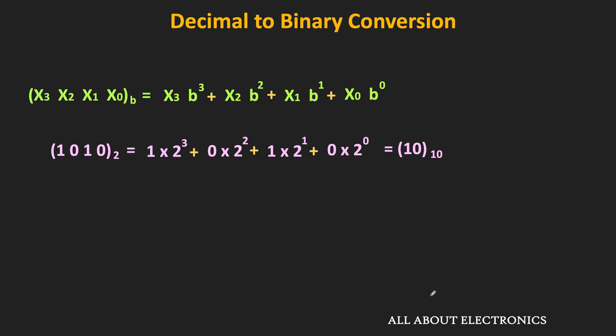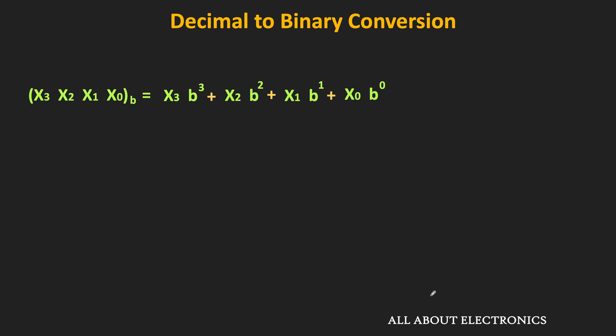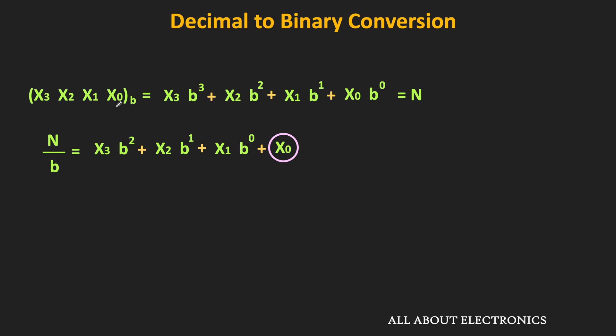By successively dividing the decimal number by the factor of 2, we can easily find the binary equivalent. In general, let's understand how it works. Let's say there is some decimal number n, and we want to find its equivalent number in some base B number system. If we divide that number by the factor of b, then the remainder is the least significant digit in that particular number system — in this case, it is equal to x0.